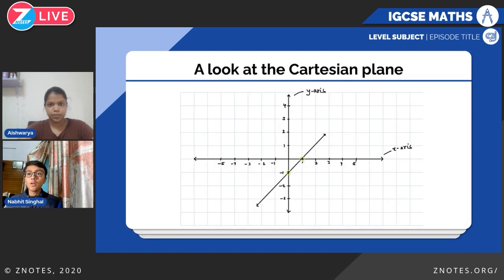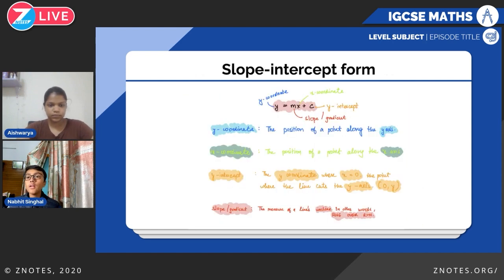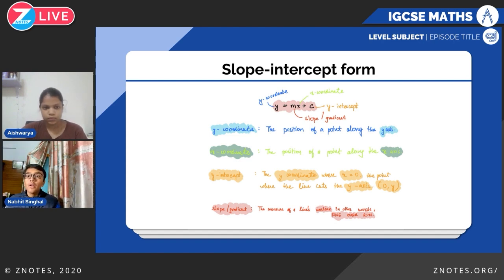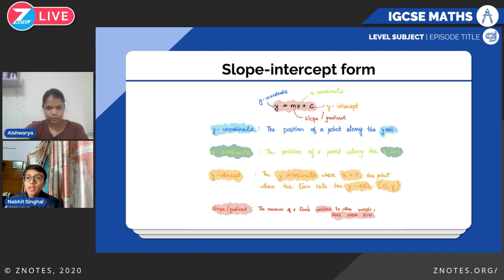We'll start with a look at the Cartesian plane. We have the x-axis laying horizontally and the y-axis vertically, and this is the slope intercept format for a line: y equals mx plus c. Here y and x are the positions of a point along the y and x-axis respectively. We have the y-intercept characterized by c — it is the point where the line cuts the y-axis where x equals zero, in the form (0, y). The gradient m is the measure of how inclined the line is, and it can be measured using rise over run.